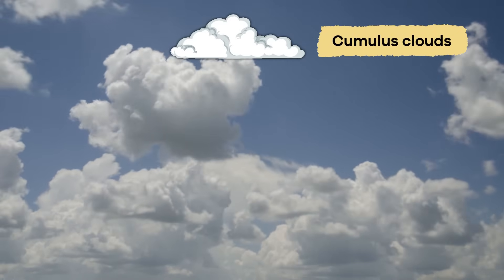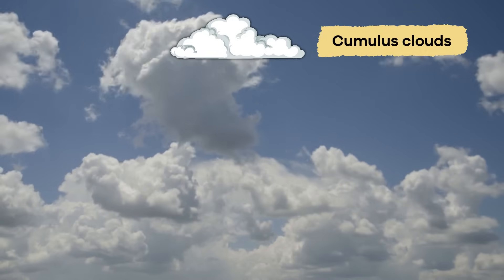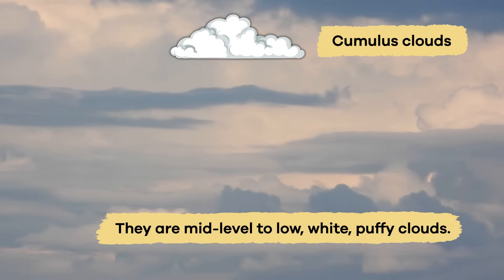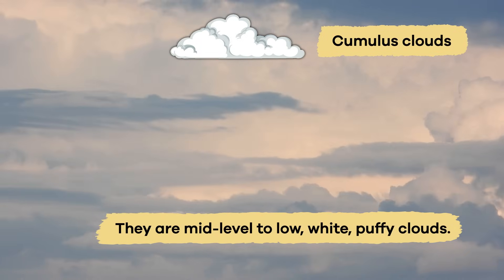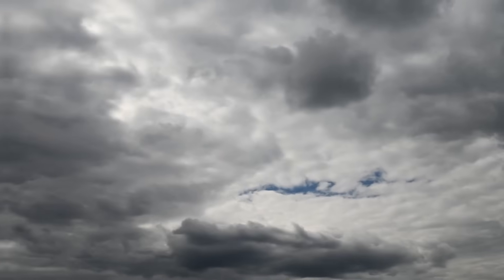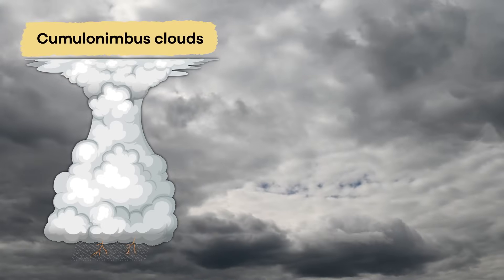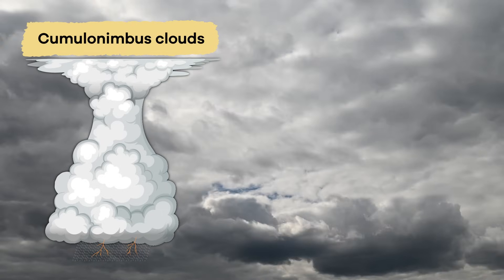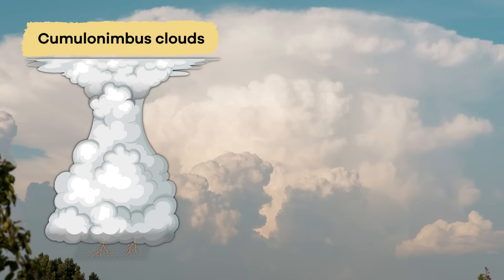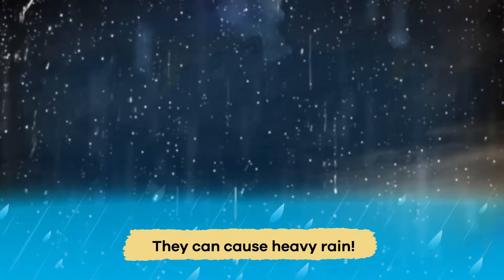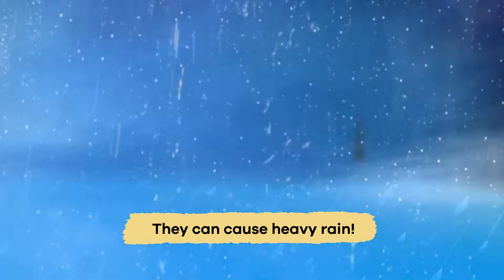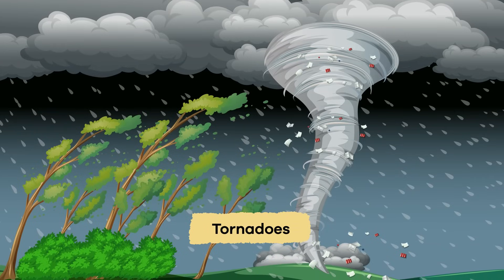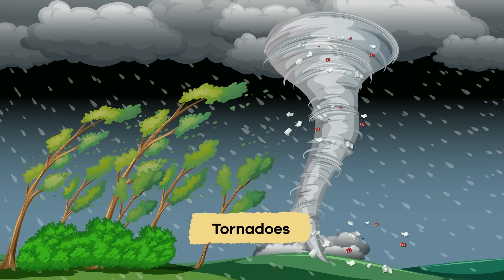Cumulus clouds are the ones you can look at and see pictures or shapes if you try hard enough. They are the mid-level to low white puffy clouds that indicate good weather. Last but definitely not least are cumulonimbus clouds — perhaps the most intimidating of them all. They can span the entire sky, cause heavy rain, and are the only clouds that cause thunderstorms, hail, and sometimes even tornadoes.